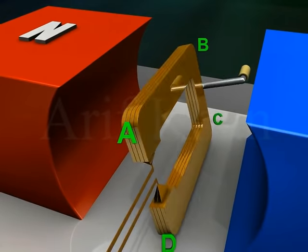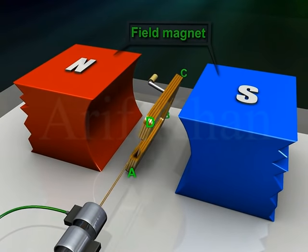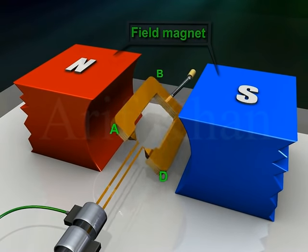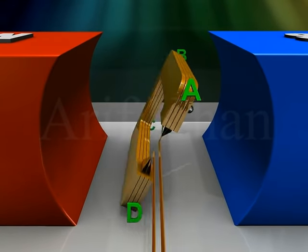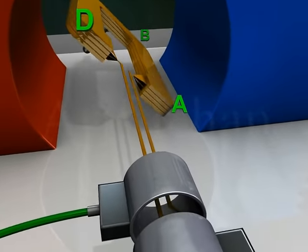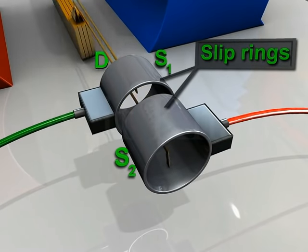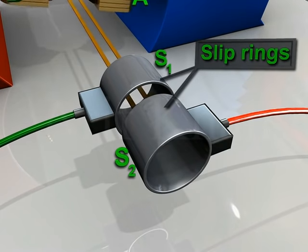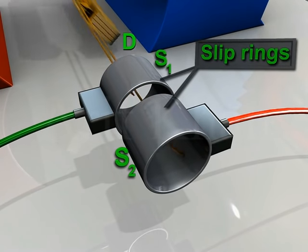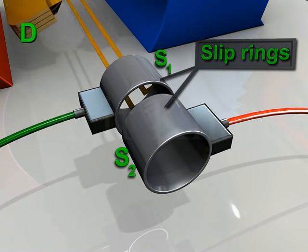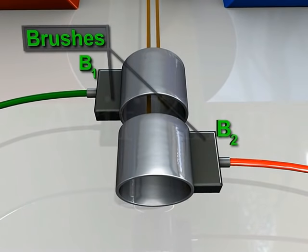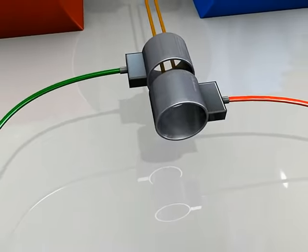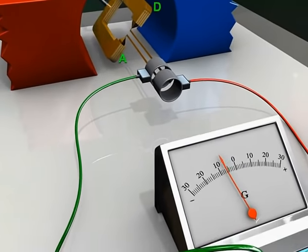A field magnet, which may be a strong permanent magnet with concave poles. Two slip rings S1 and S2, which are connected to the armature and rotate with it. Two brushes B1 and B2, which provide electrical contact with the slip rings.